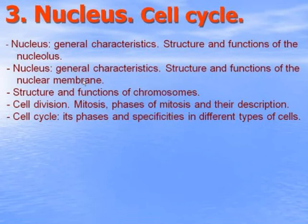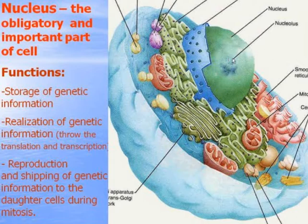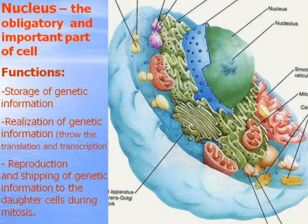Nucleus. Cell cycle. The nucleus is the obligatory and important part of the cell. Functions include: storage of genetic information in genes of chromosomes, realization of genetic information through translation and transcription, reproduction and shipping of genetic information to daughter cells. Neuron, mitosis.